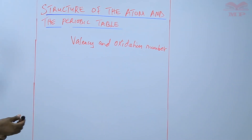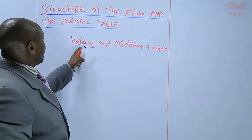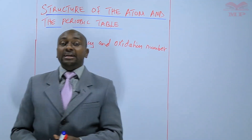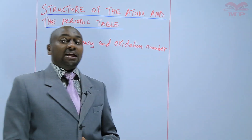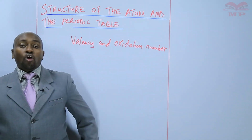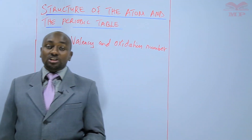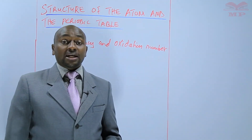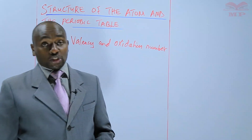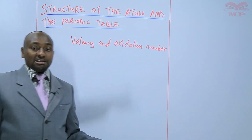First, we will define what valency is. We refer to valency as the combining power of an element — the number of electrons gained or lost by an atom during ion formation. The number that it gains or loses is the valency.